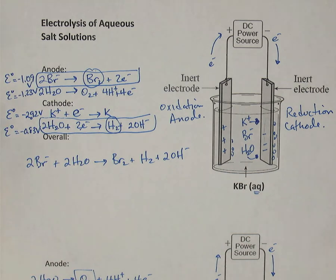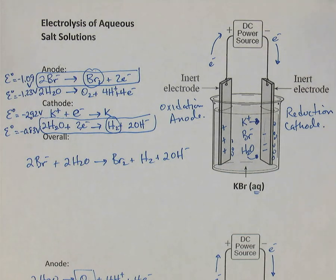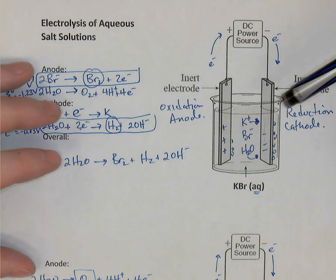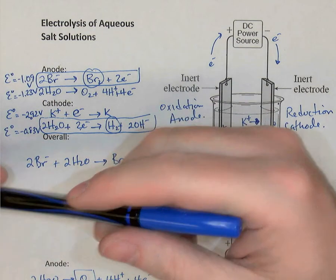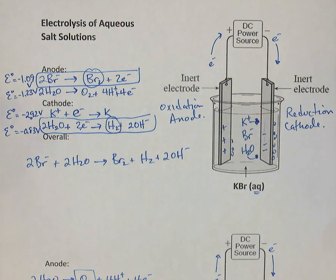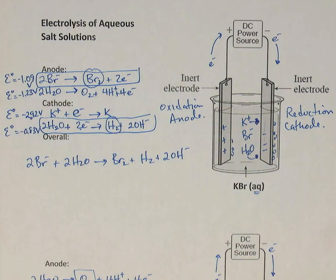In the next video on electrolysis, we'll go from being qualitative — just describing things — to being quantitative. We'll ask things like how many grams of potassium will form, or how many liters of hydrogen would form, given a certain electric current operating for a certain time.